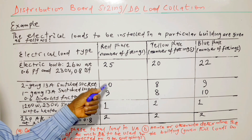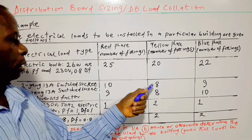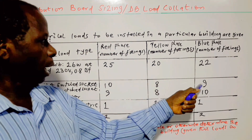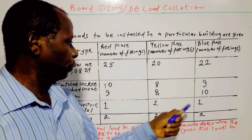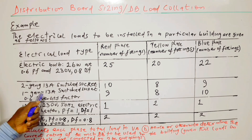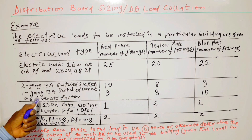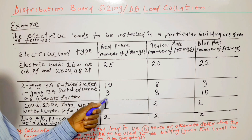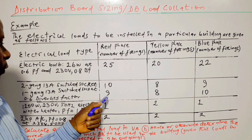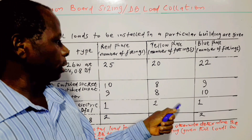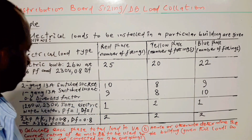For the 2-gang cardinal switch circuits, we have 10 on red phase, 8 on yellow phase, and 9 on blue phase. Then we have 1-gang cardinal switch circuits at 0.6 diversity factor as well. We have 9 on red phase, 8 on yellow phase, and 10 on blue phase.